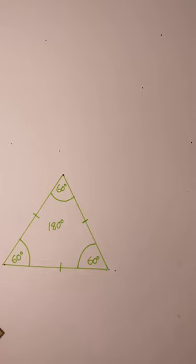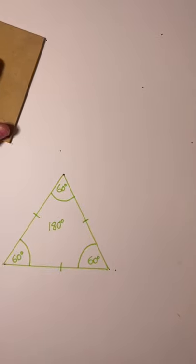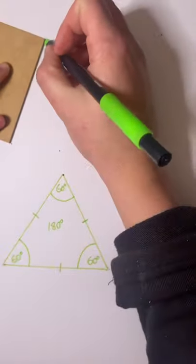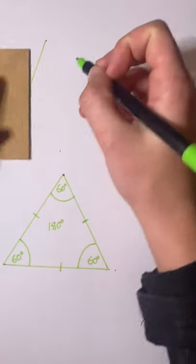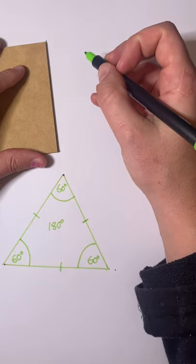Next we have an isosceles triangle. The way I like to remember isosceles triangles is that one end is isolated from the other. So in an isosceles triangle we have two lines that are the same length, whilst the third is different.